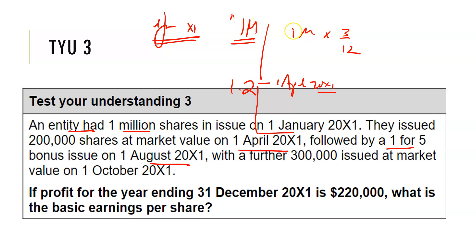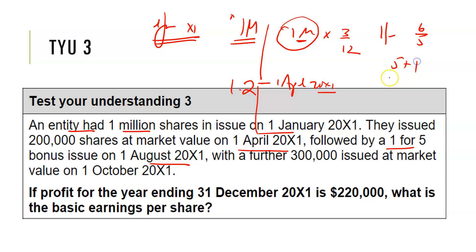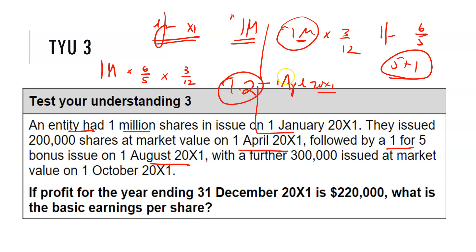The question is: what is the bonus on these 1 million shares? The bonus is 1 for 5, meaning the bonus fraction is 6 over 5 — you have 5 and get an additional 1. So starting with 1 million shares, you multiply by 6 over 5 and weight that. Then you get to the 1.2 million market shares — because you issued another 200,000.